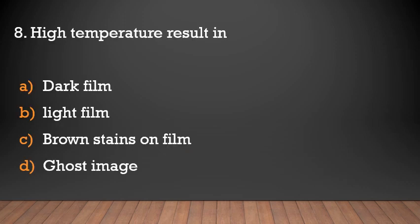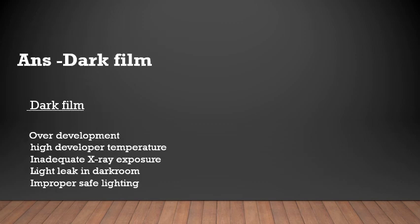High temperature results in — options: dark film, light film, brown stain on film, ghost image. Answer: dark film. Dark radiographic film can result from overdevelopment, high developer temperature, inadequate X-ray exposure, light leaking into the darkroom, or improper safe light.